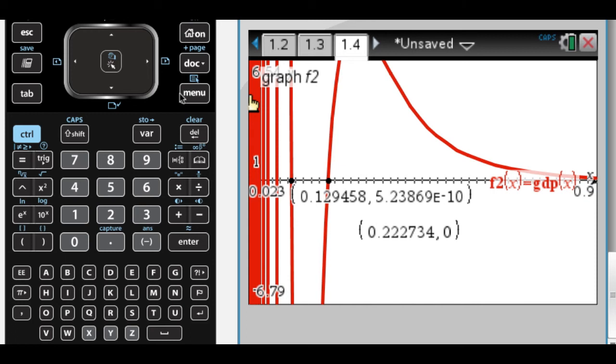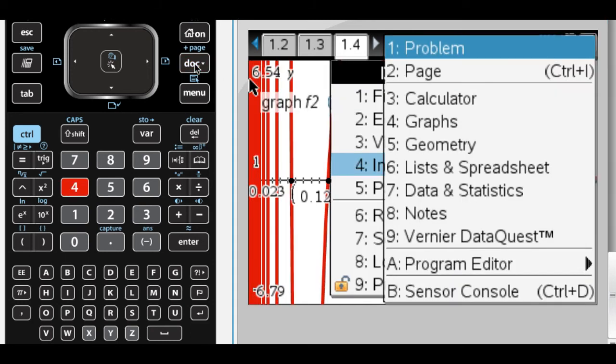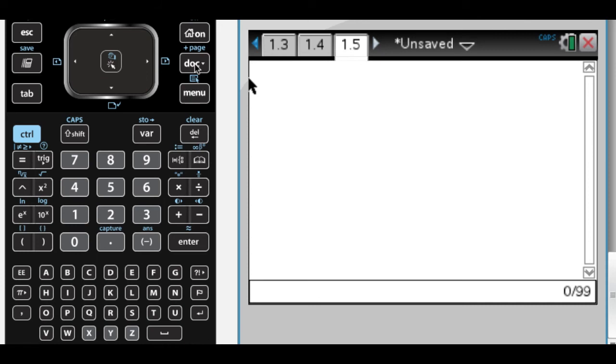So we want the equation of a line tangent to the graph at x equals 0.3. So let me insert the calculator page. All right, so I need the slope, which will be g prime of 0.3. All right, so that's my slope.